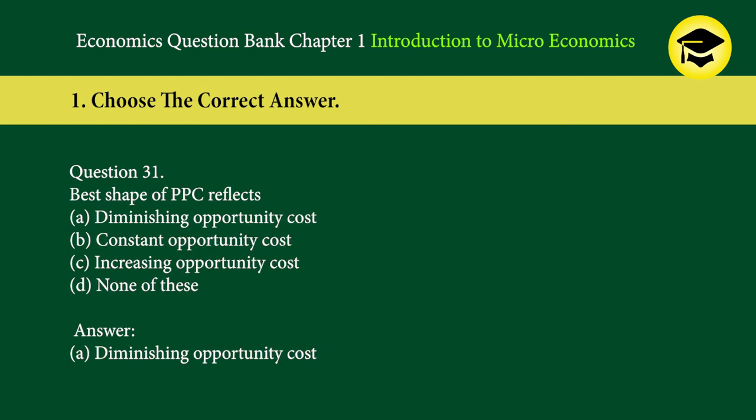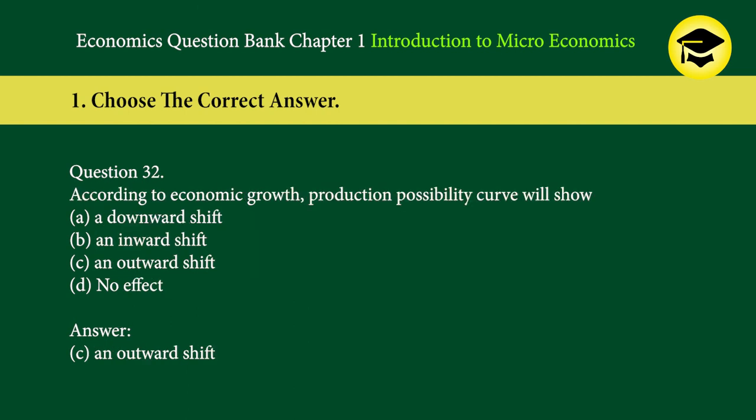Question 31: The best shape of PPC reflects — A. diminishing opportunity cost, B. constant opportunity cost, C. increasing opportunity cost, D. none of these. Answer: A. Diminishing opportunity cost.